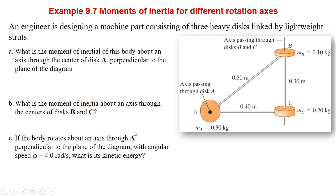Let's take a look at our first example, how to calculate moment of inertia. An engineer is designing a machine part consisting of three heavy disks linked by lightweight struts. What is the moment of inertia of this body about the axis through the center of disk A perpendicular to the plane of the diagram? You have three particles. That's MA RA squared plus MB RB squared, RB is 0.5, and C is 0.2 times 0.4 squared. So how is this rotating? It's rotating like this, in the plane of the screen.